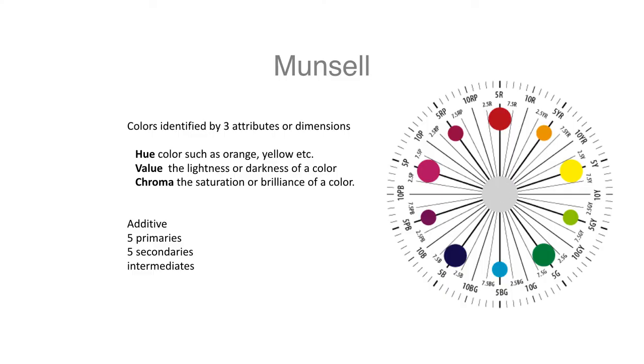So the Munsell system is a 10-hue system. And Munsell's goal was to get rid of what he considered the arbitrary color names and instead use a notation system that would specify specific colors and hues by various codes.